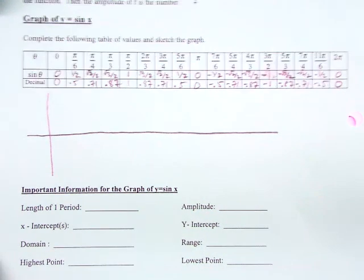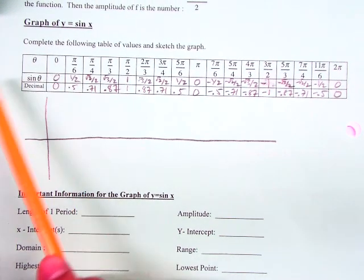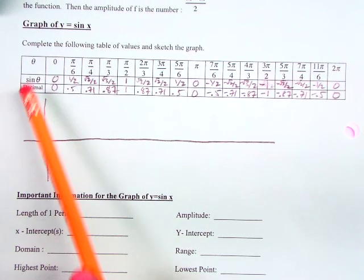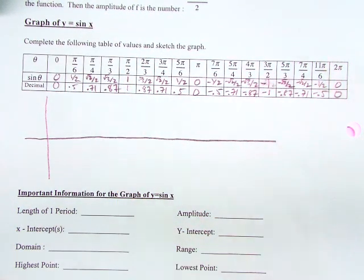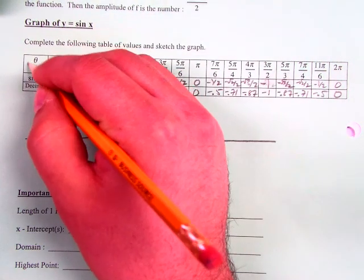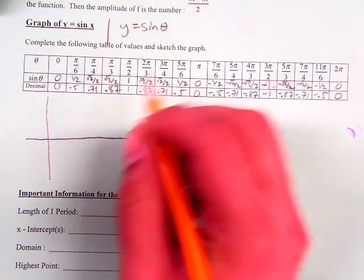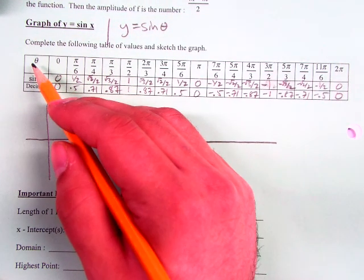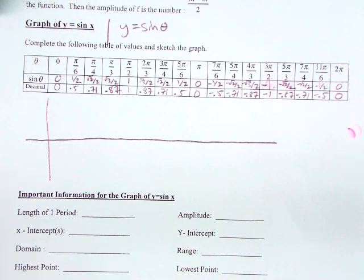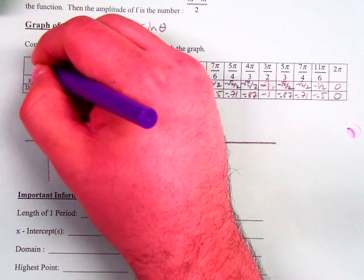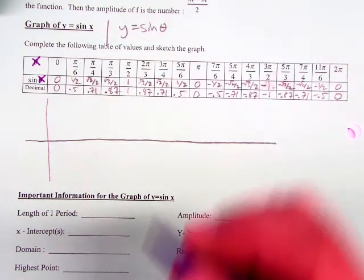Alright, so what you should have done for y equals sine x, which by the way, according to how they've graphed it here, y equals sine theta is really what you're doing. Or if you prefer, you can interchange this and make this x and make that x, and then I think it'll make more sense.